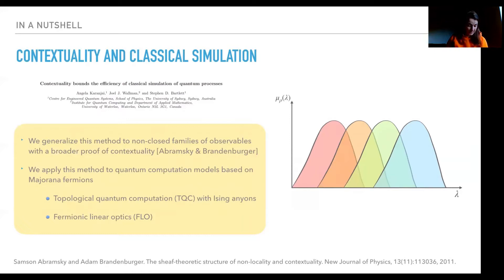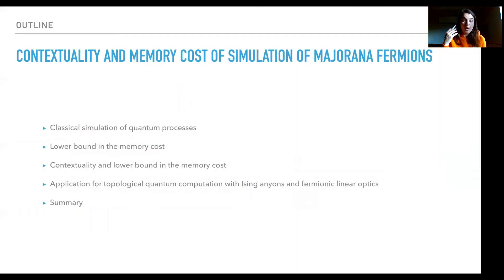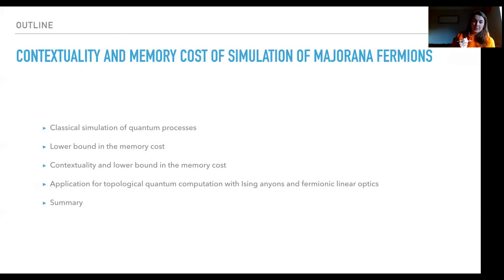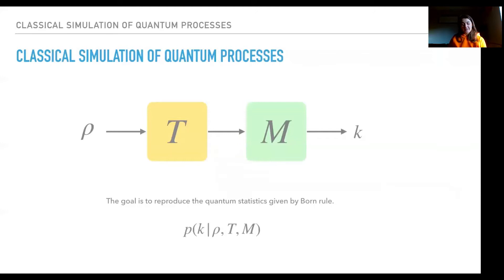We use the framework by Abramsky and Brandenburg, and we applied this method to quantum computation models based on Majorana fermions — specifically, topological quantum computing with Ising anyons and fermionic linear optics. The outline of the talk: first I'll explain classical simulation of quantum processes, then show the lower bound, then connect contextuality to the lower bound in memory cost, and then apply this to topological computing and fermionic linear optics.